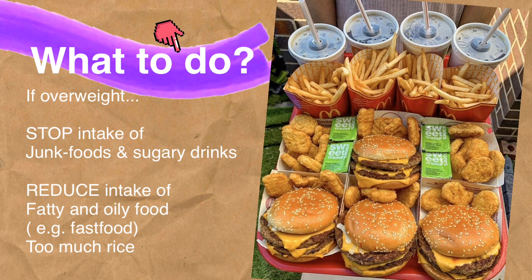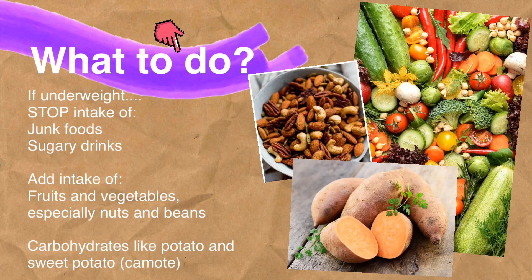What to do if overweight: Stop intake of junk foods and sugary drinks, and reduce intake of fatty and oily foods such as fast food and too much rice. If underweight: Stop intake of junk foods and sugary drinks, and add intake of fruits and vegetables, especially nuts and beans, and carbohydrates like potato and sweet potato.